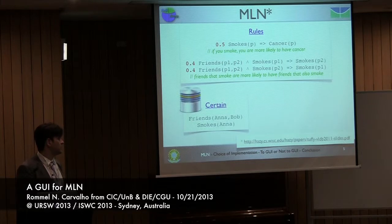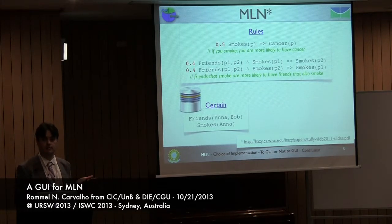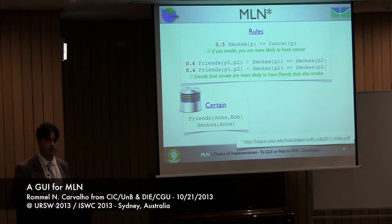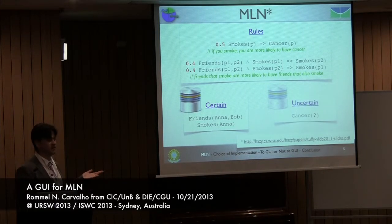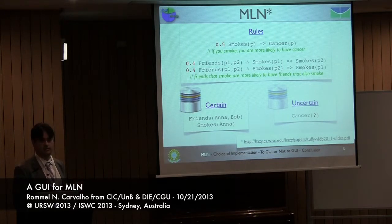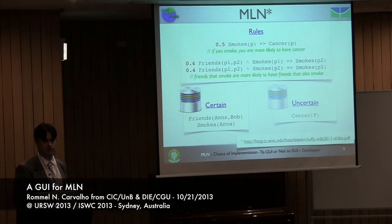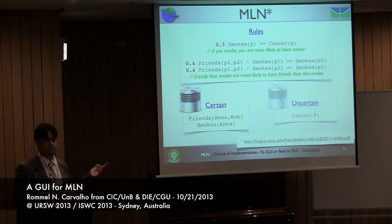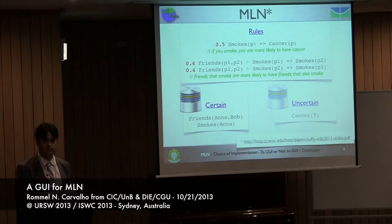Basically what you do is have triples. You have data that you're certain about because you put it there. And on the other side, you want to infer what's uncertain — what are the probabilities that certain people have cancer? You're going to have some probabilities associated to that because you're not certain the person has cancer unless it's in your triple store.